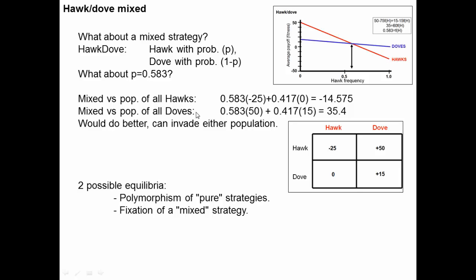What if that mixed strategy enters a population of all doves? 58.3% of the time they get the hawk payoff and 41.7% of the time they get the dove payoff, giving a mean payoff of 35.4 — better than the doves are doing. So this mixed strategy could invade either a population of all doves or a population of all hawks and do better, which is part of why the hawk-dove game is not really an ESS.